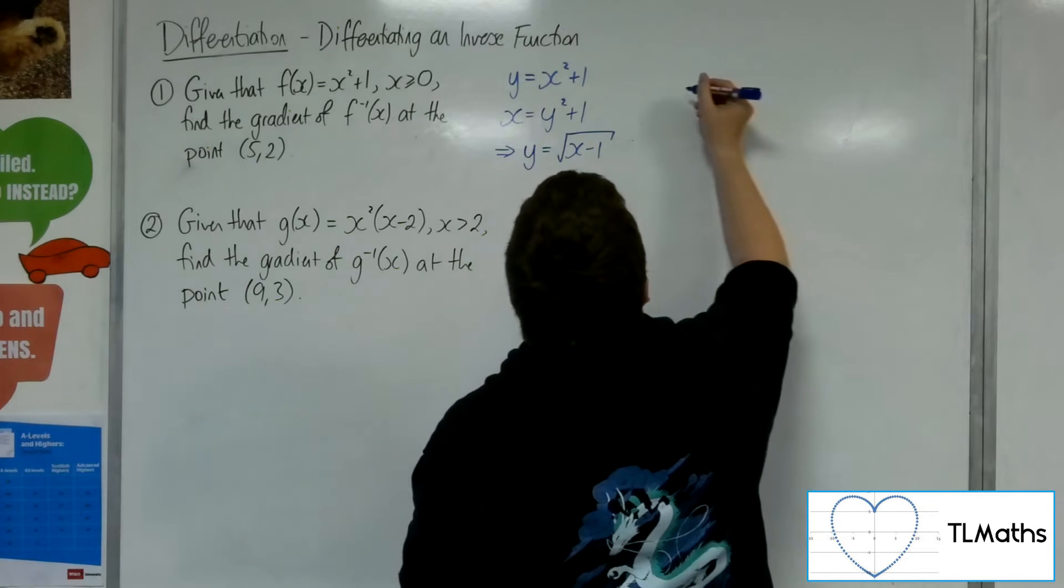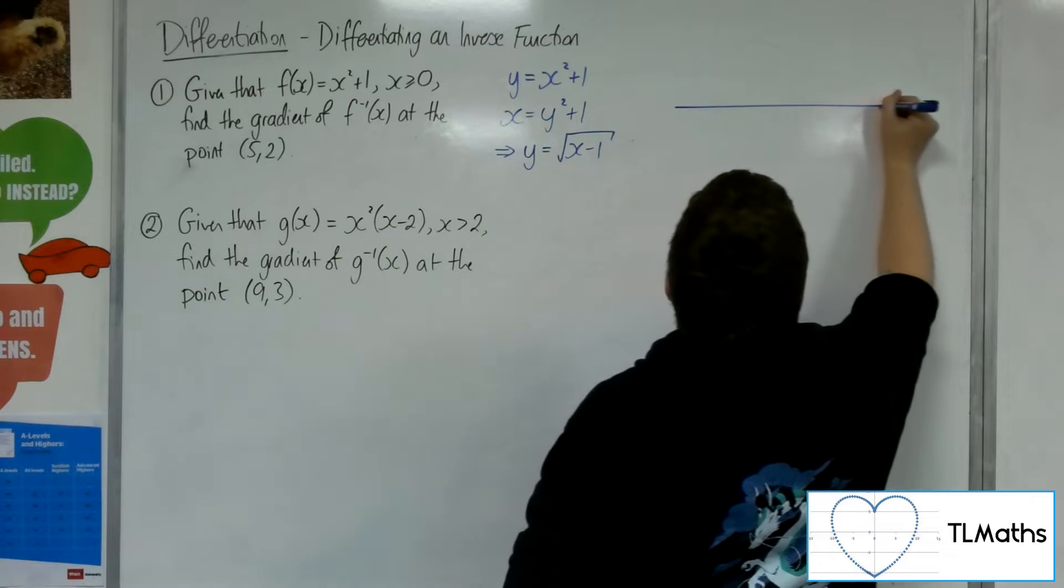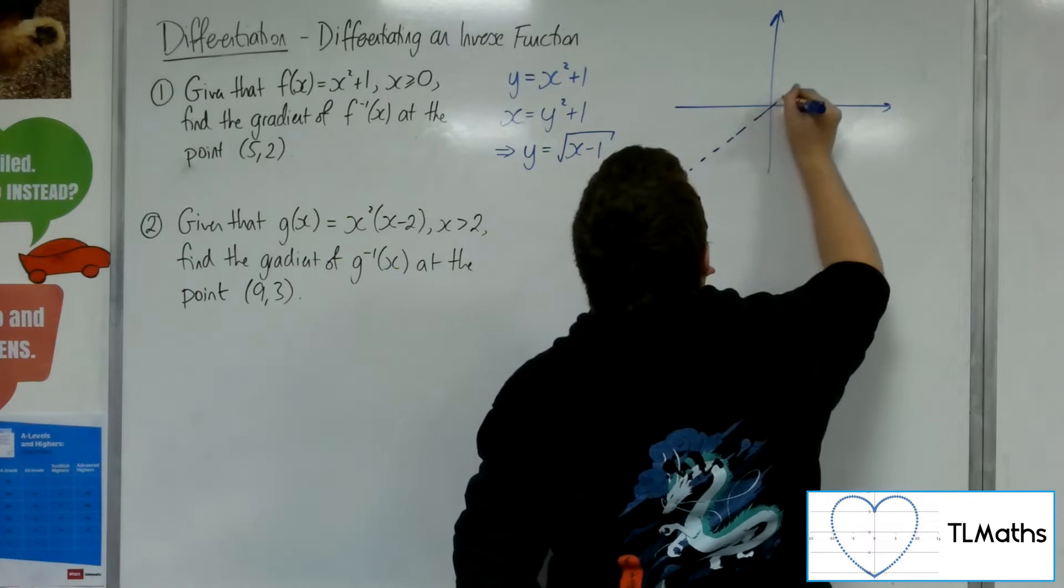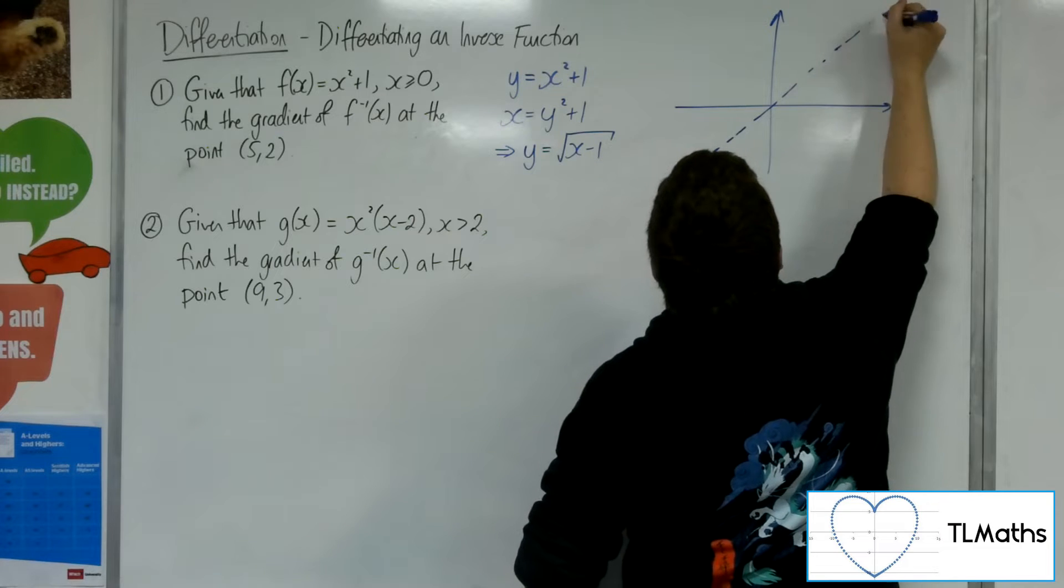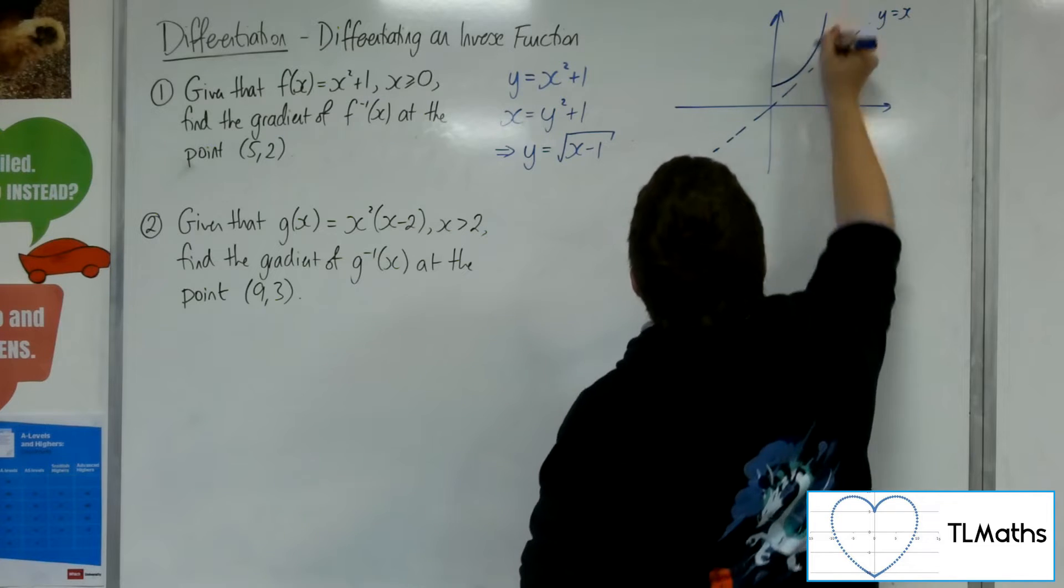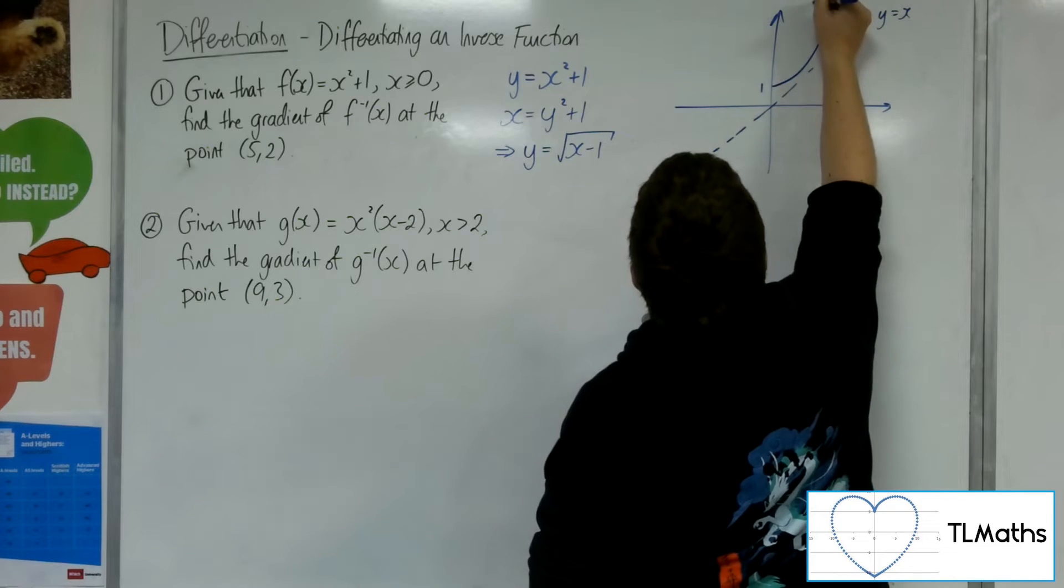So let's do a little graph visually. Okay, let's see what's going on. Remember, we've got the y equals x as the reflecting line. We've got the x squared plus 1. So there's f(x).